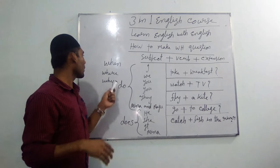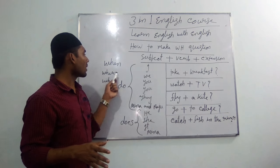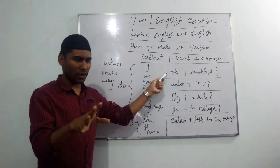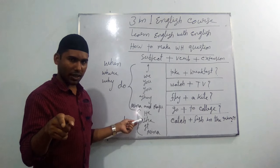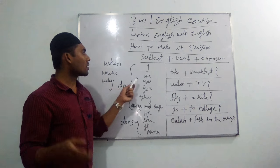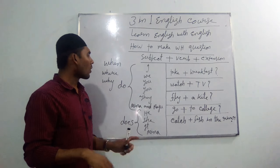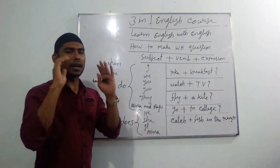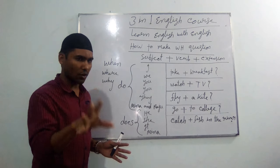Next, the WH word 'where.' 'Where' is used to ask about place. For example, 'Where do I take breakfast?' — Ami kothay nashta kori. 'Where do you take breakfast?' — Tumi kothay nashta koro. 'Where does she take breakfast?' — Se kothay nashta kore. Now for answers: 'Where do we take breakfast?' — We take breakfast at home. 'Where do you take breakfast?' — I take breakfast outside. 'Where does she take breakfast?' — She takes breakfast at home.